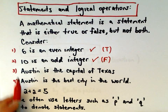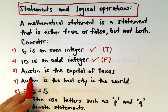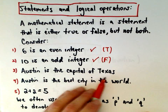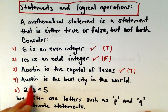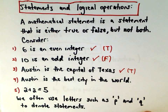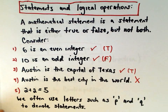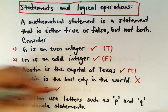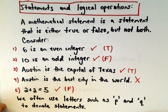They don't have to deal with mathy things — a statement just needs a truth value. 'Austin is the capital of Texas' is a mathematical statement because it's true. 'Austin is the best city in the world' is not a mathematical statement because it doesn't really have a truth value — you can argue about that all day. And '2 plus 2 equals 5' is a mathematical statement because it has a truth value; it happens to be false, but it's still a mathematical statement.